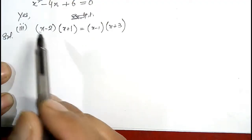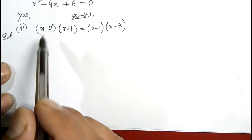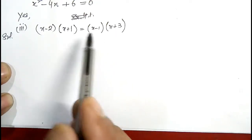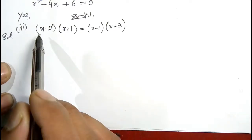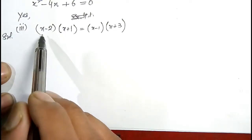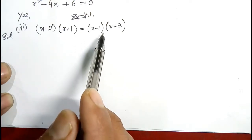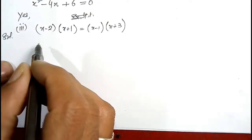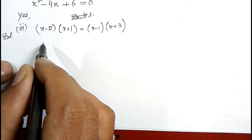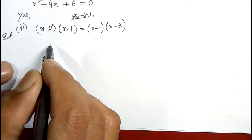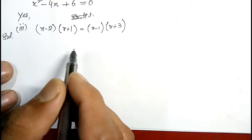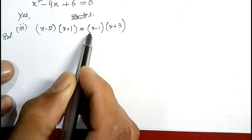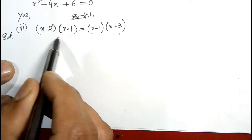This is Exercise 4.1, question number one, third part. We have to show whether this expression is a quadratic equation or not. I will solve this and explain in detail how we can show whether an expression is a quadratic equation or not. This is the right hand side and this is the left hand side, with an equality sign.